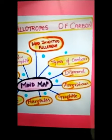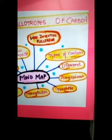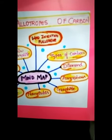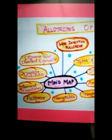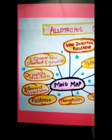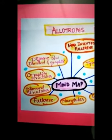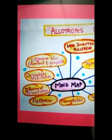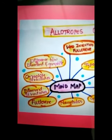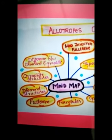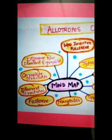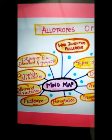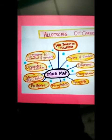Mind Map: First, Types of Carbon — Diamond, Amorphous, Graphite, Nanotubes, and Fullerene. Second, Types of Structures — Graphite structures and Diamond structures. Third, the Difference between Diamond and Graphite. Fourth, who invented Fullerene? Thank you guys for watching this video.